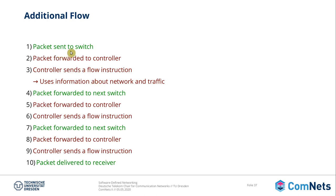To recap: the packet is sent to the switch, then forwarded to the controller because the switch doesn't know what to do. The controller sends a flow instruction, but this time uses information about the network and traffic to make a smarter routing decision. The switches that don't yet have a flow table entry first ask the controller what to do.